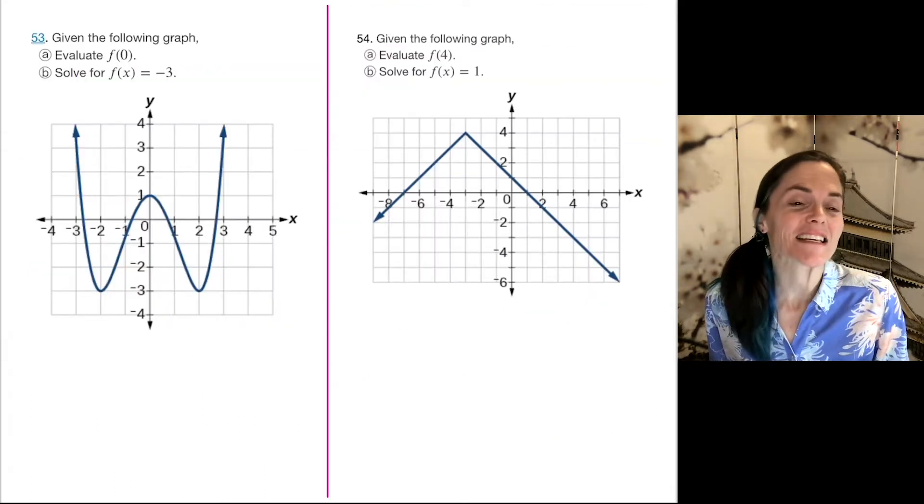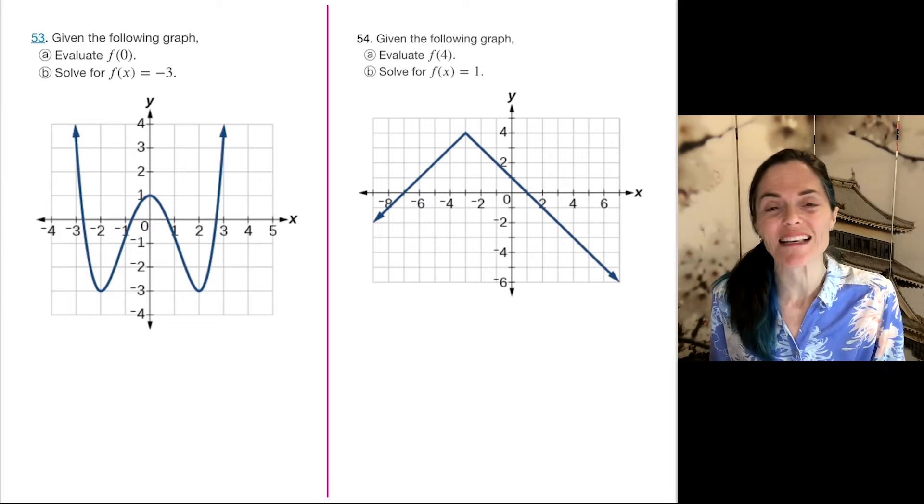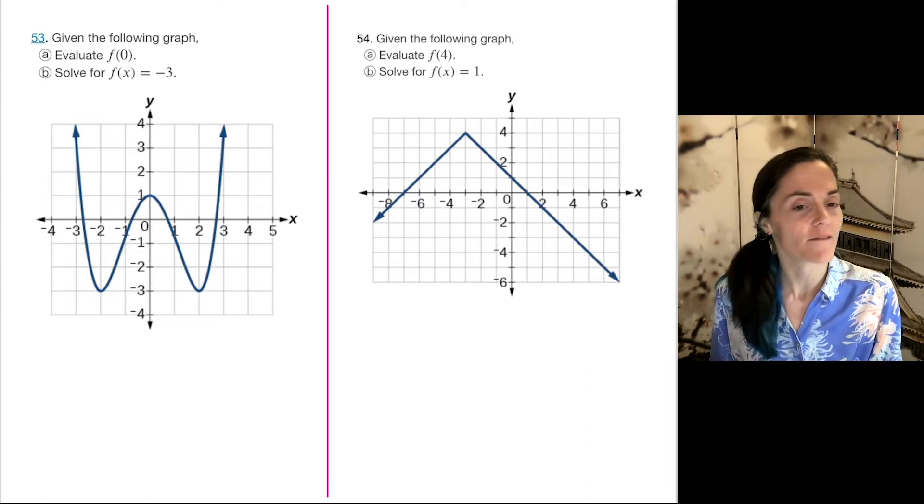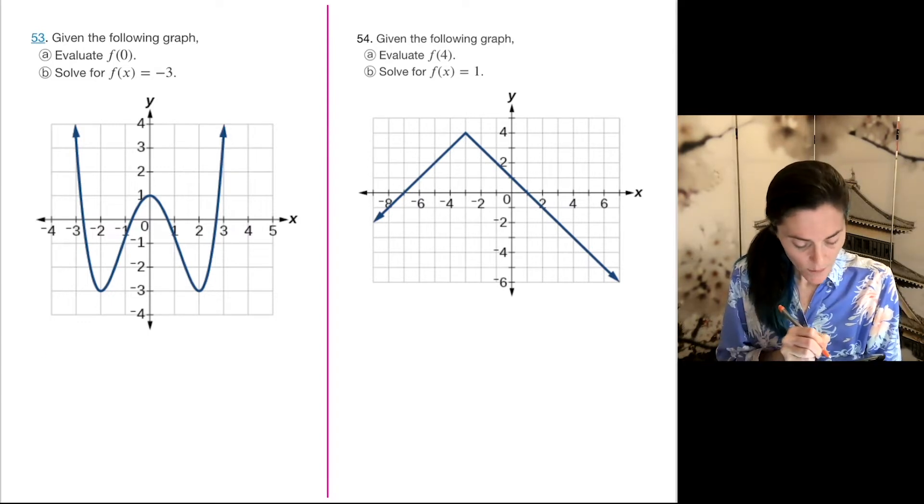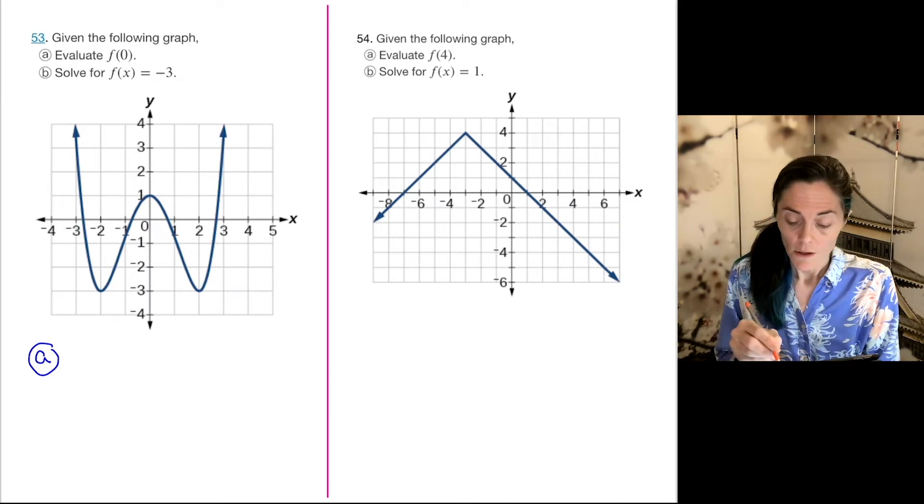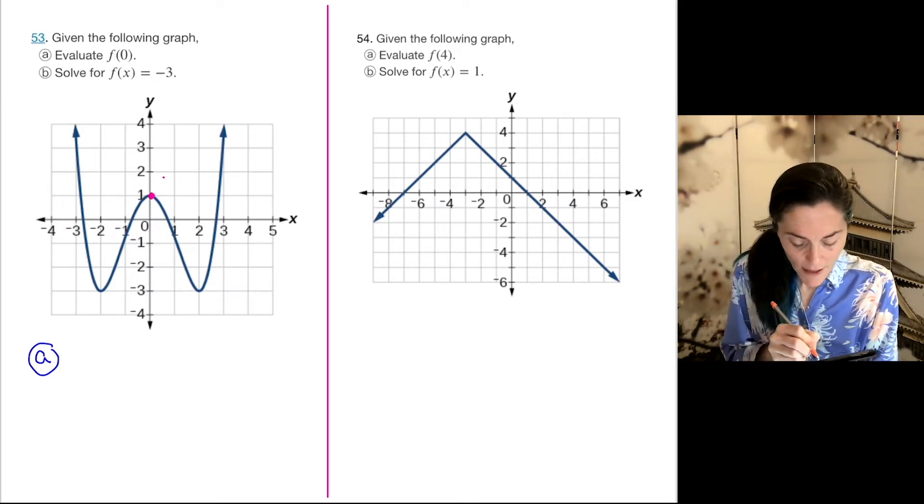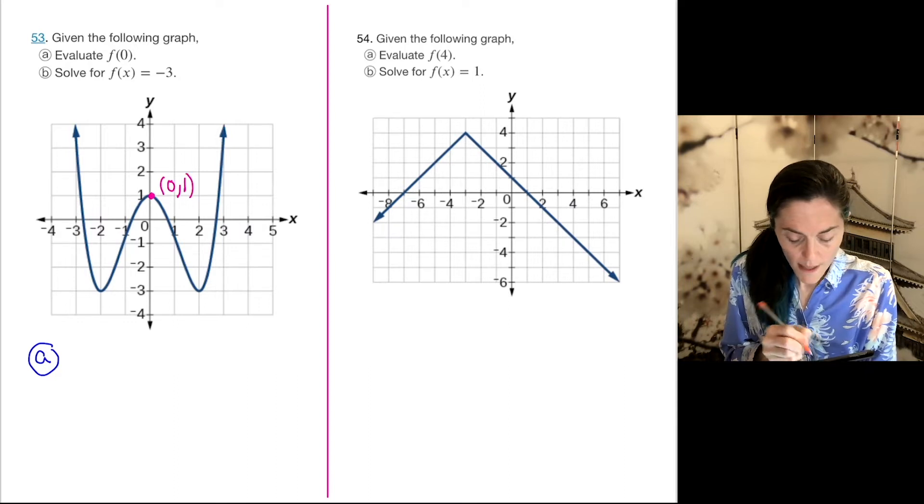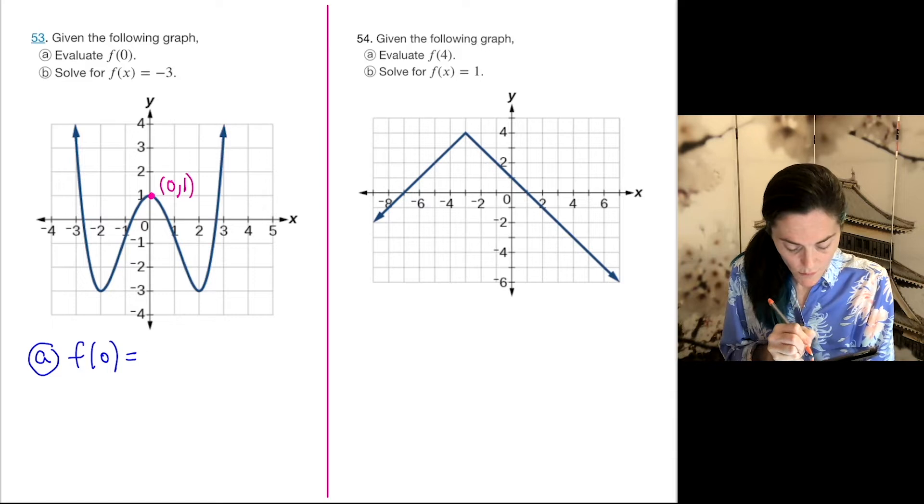Wonderful questions. We get to look at a graph and do the same thing we just did on the last two, except we're doing it from the graph. So 53, letter a, we want to evaluate f(0). Here's the point on the graph. The point on the graph is 0 comma 1, and so this tells us that f(0) equals 1.